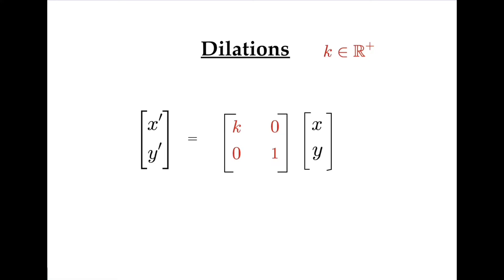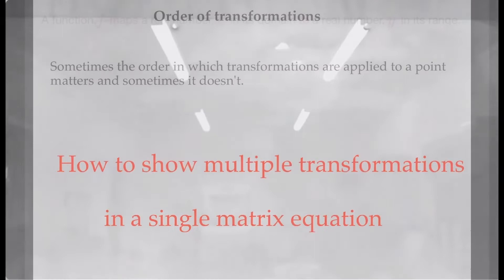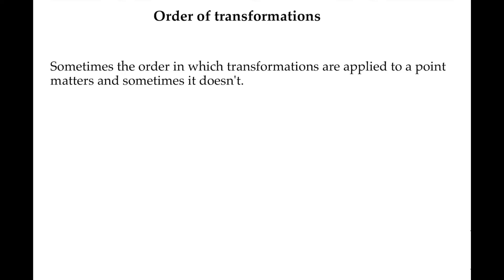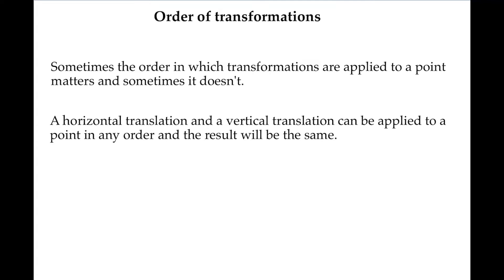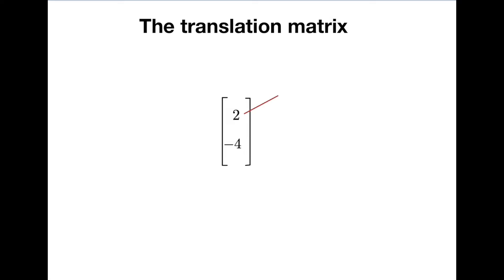Sometimes the order in which transformations are applied matters and sometimes it doesn't. A horizontal translation and a vertical translation can be applied to a point in any order and the result will be the same. So information for both types of translation can be placed in the translation matrix without further consideration of order. For example, a matrix can show a translation of two units to the right and four units down, or half a unit to the left and pi units up.